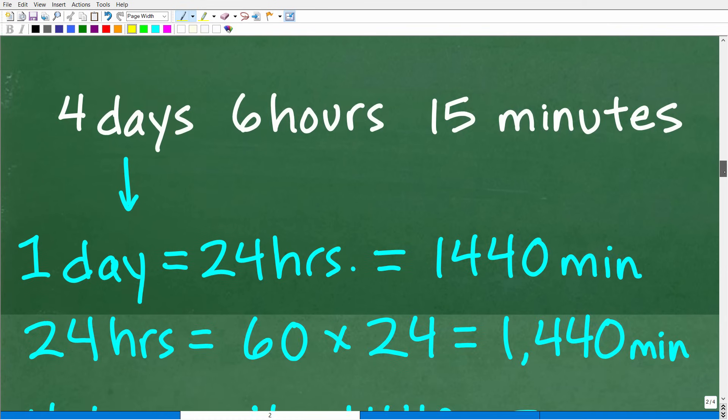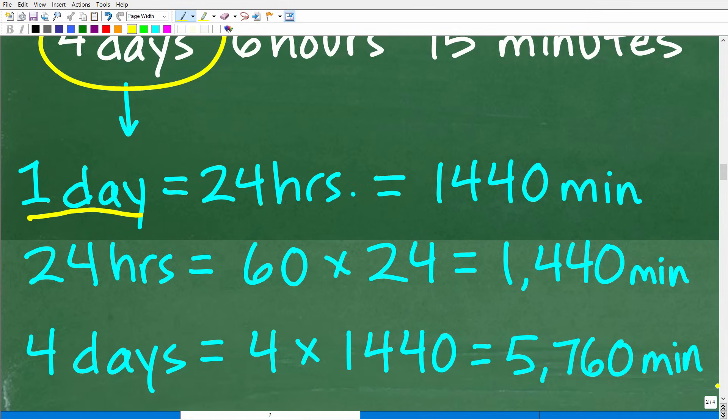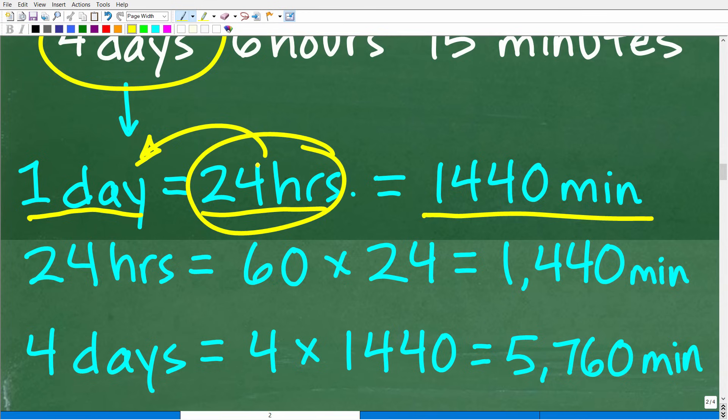Alright, so four days, six hours, 15 minutes. We've got to figure out how many total minutes. Let's start with the days. Okay, so in one day, we know we have how many hours. Now, I'm not going to walk through all of the conversion here because I think most people, you know, for the most part, understand or have this knowledge. It's very common knowledge, but there are 24 hours in one day. Okay, so how many minutes are there in one day? Well, there are 1,440 minutes. So how did I get that? Well, if there's 24 hours in one day, how many minutes are there in one hour? Okay, well, there's 60 minutes in one hour. And if there's 24 hours in one day, so to find the total number of minutes in 24 hours or one day, just take 60 and multiply it by 24 and we get 1,440 minutes.